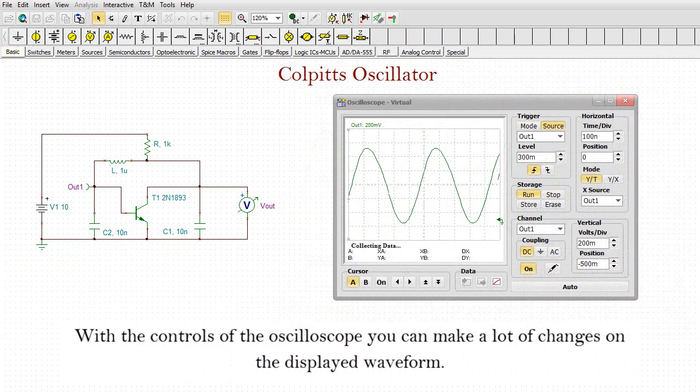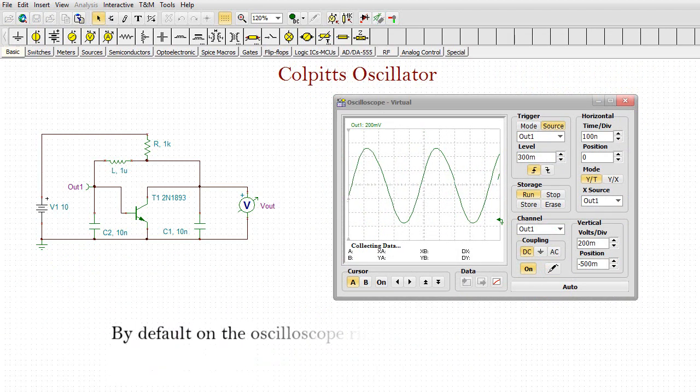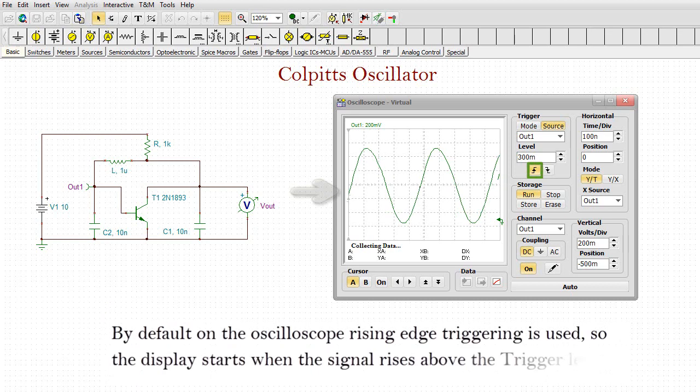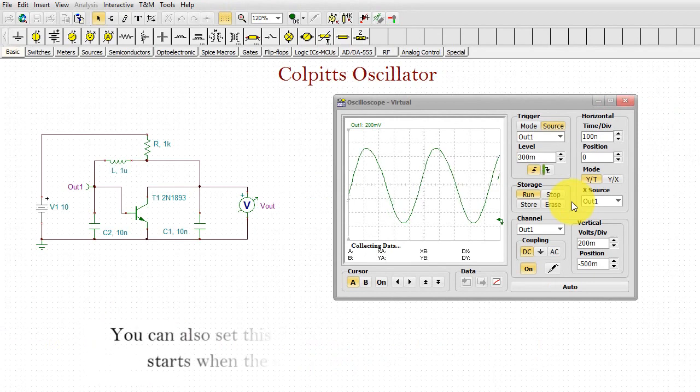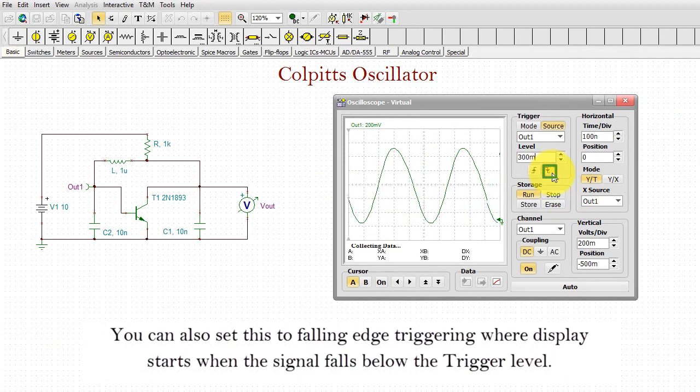With the controls of the oscilloscope, you can make a lot of changes on the displayed waveform. Here are a few. By default, on the oscilloscope's rising edge, triggering is used. So, the display starts when the signal rises above the trigger level. You can also set this to falling edge triggering, where the display starts when the signal falls below the trigger level.